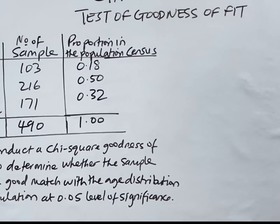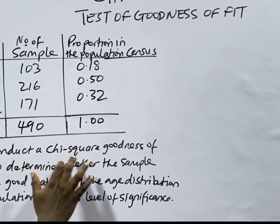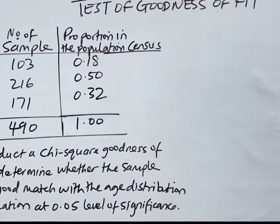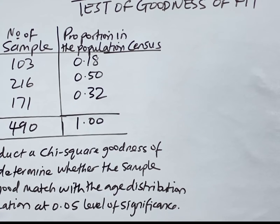The question requires us to conduct a chi-square goodness of fit test to determine whether the sample provides a good match with the distribution in the population at the 0.05 level of significance.